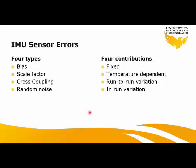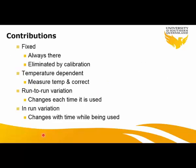Like any other measurement device in surveying, the IMU suffers from a number of errors. These can be categorized into four types: bias, scale factor, cross coupling, and random noise. Each of these four types can also have different contributions: fixed contribution, temperature dependent, run-to-run variation, and in-run variation.